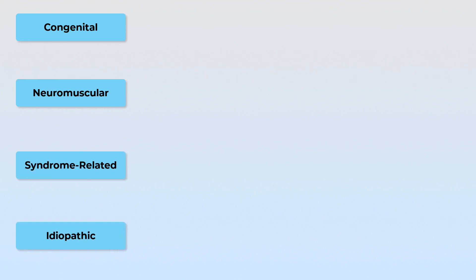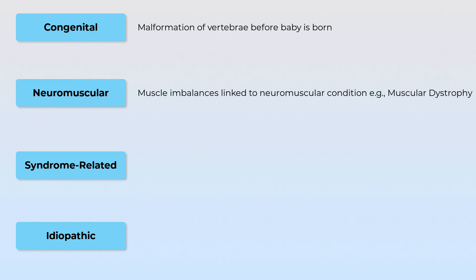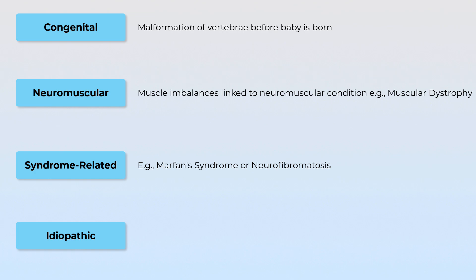Congenital scoliosis results from malformations of the vertebra before the baby is even born. Neuromuscular disorders such as cerebral palsy or muscular dystrophy can cause scoliosis due to uneven muscle support. Conditions like Marfan syndrome and neurofibromatosis are examples of syndrome-related causes that may lead to scoliosis, which can be induced by factors like pain, spinal cord anomalies, tumors, and infections. However, idiopathic scoliosis, where there is no specific cause identified, is the most frequently observed type in medical settings, accounting for up to 80% of structural scoliosis cases.